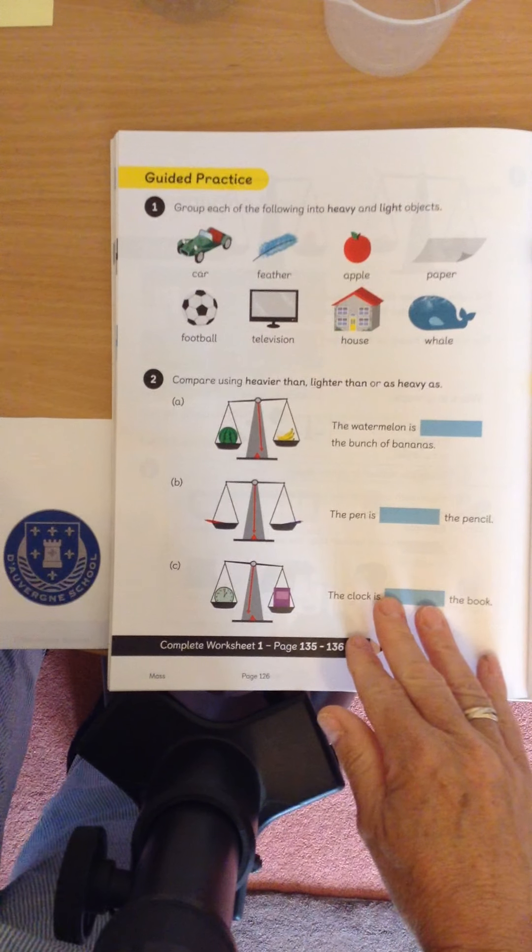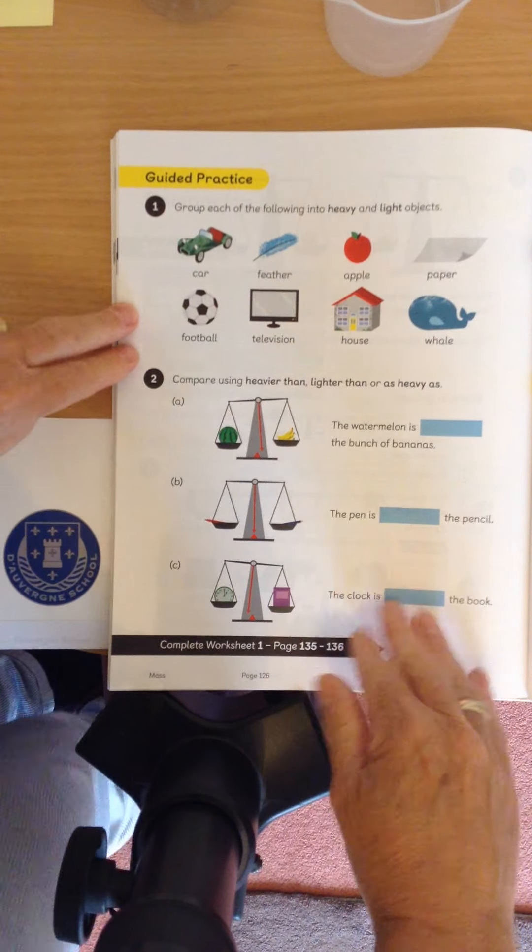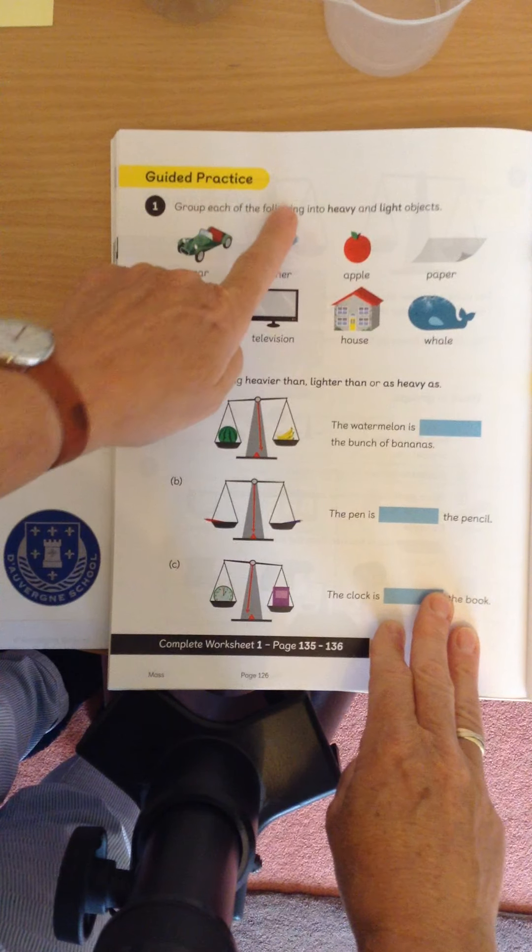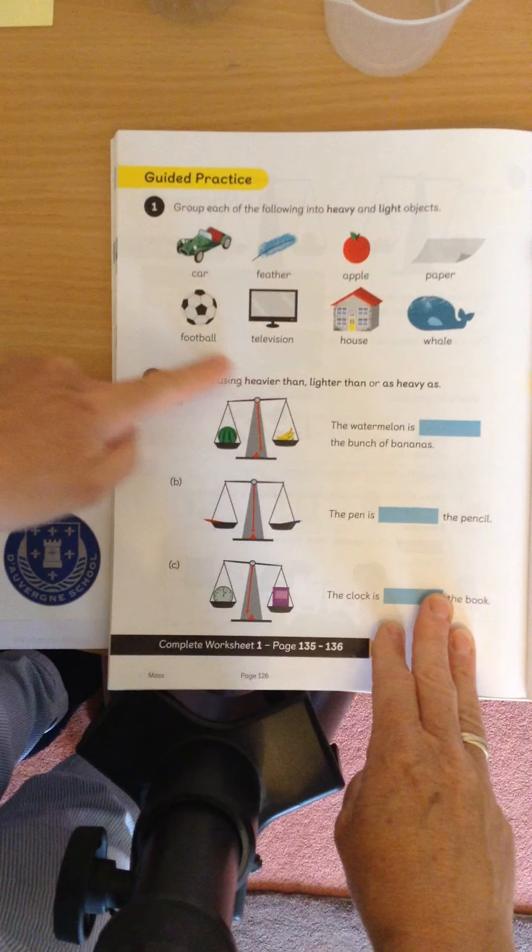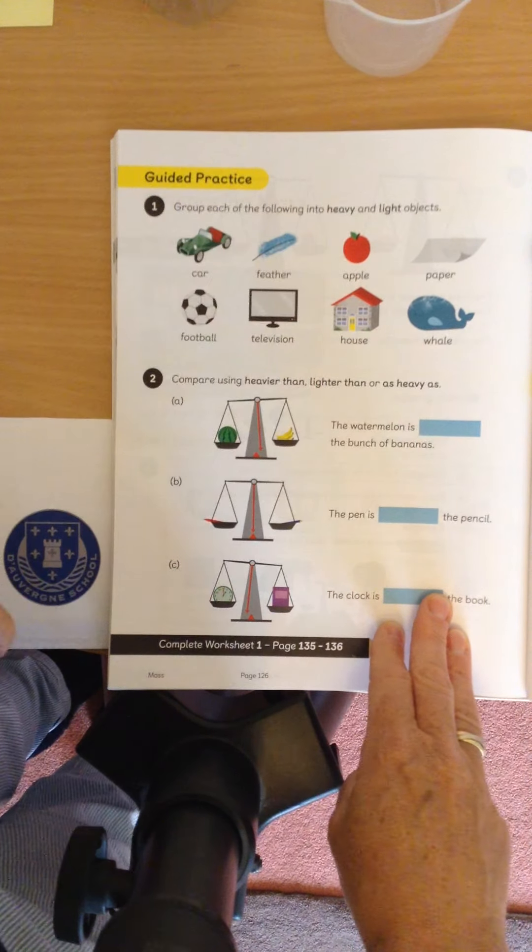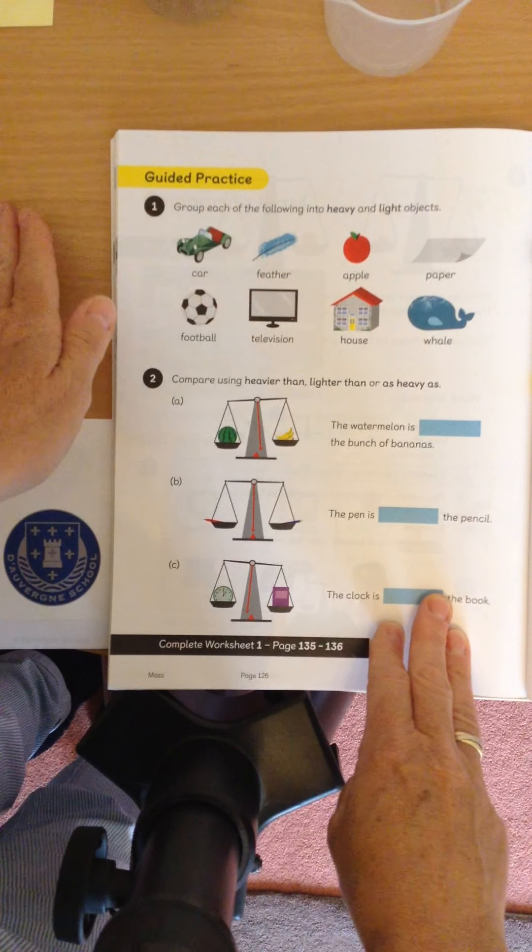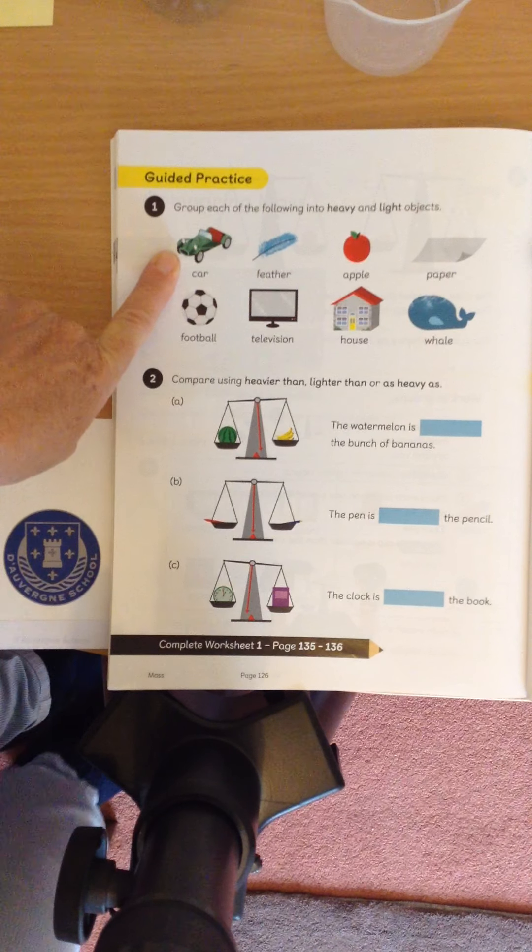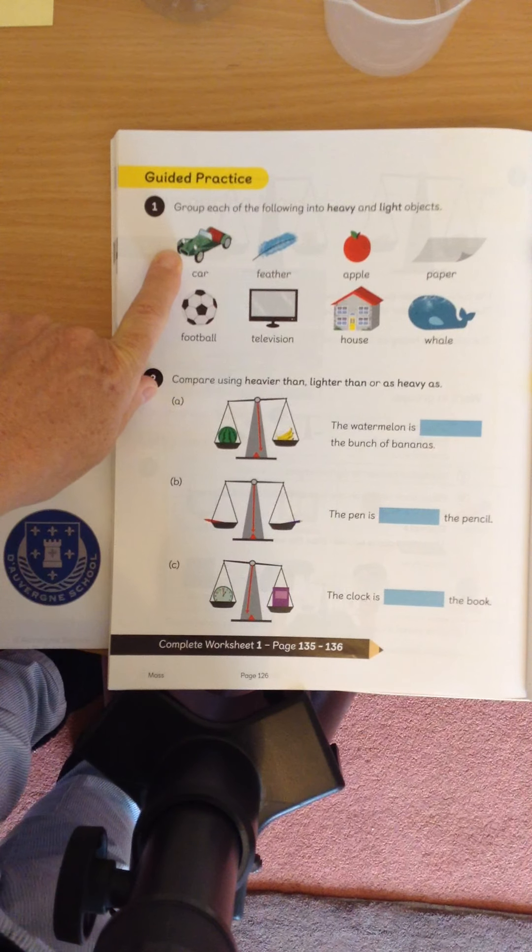Right, let's have a look at our guided practice. And it's asking us in number one to group each of these following, each of these pictures, each of these items, objects, into heavy and light. So, if we had heavy on one side and light, which is which? Let's have a look. Car, heavy or light? That's right, it's heavy.